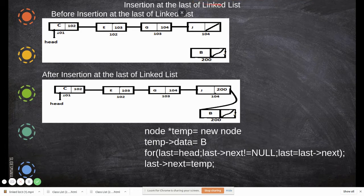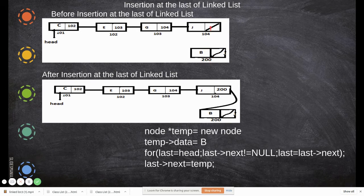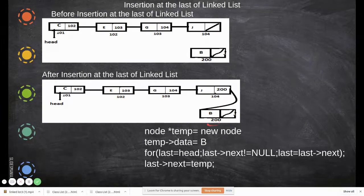Now let's look at insertion at the last position of the linked list. Imagine this is the given linked list and we are going to add a node as the last node. We have to manipulate the pointer of the last existing node to point to the new node. First, create a new node, add the data, and by default it will have a null pointer. The new node's memory location, say 200, needs to be written into the last node's next field.